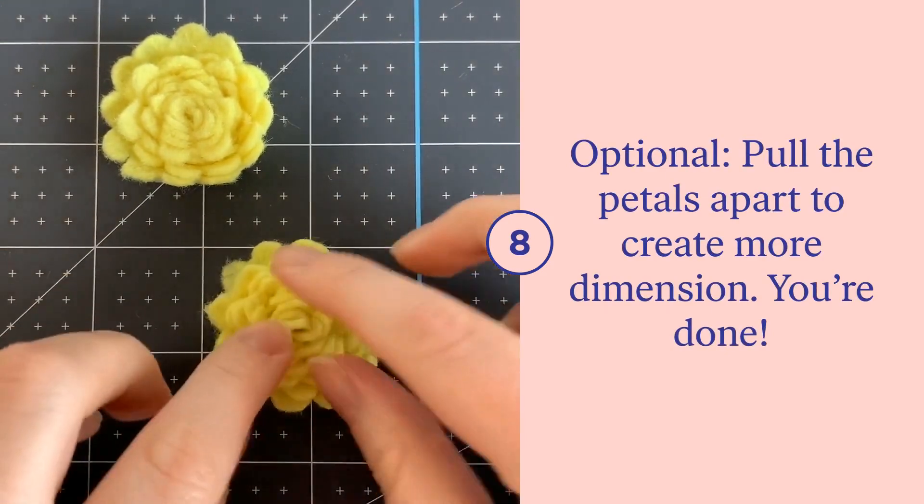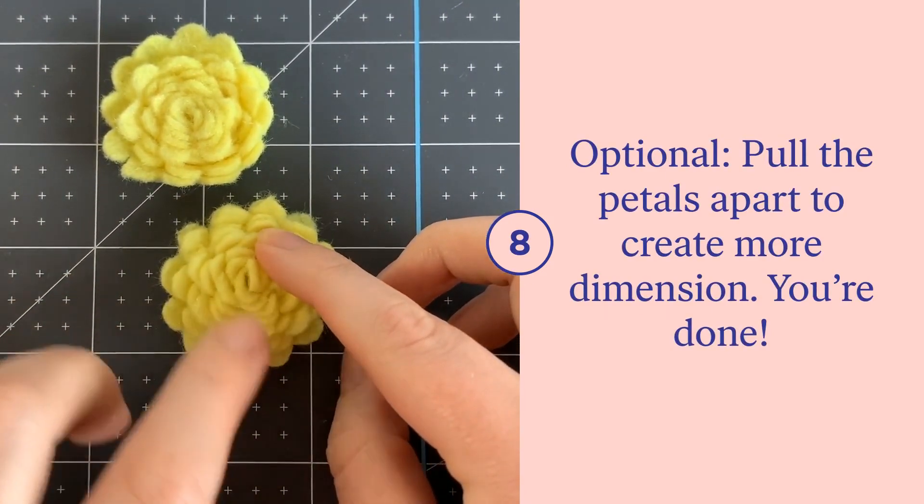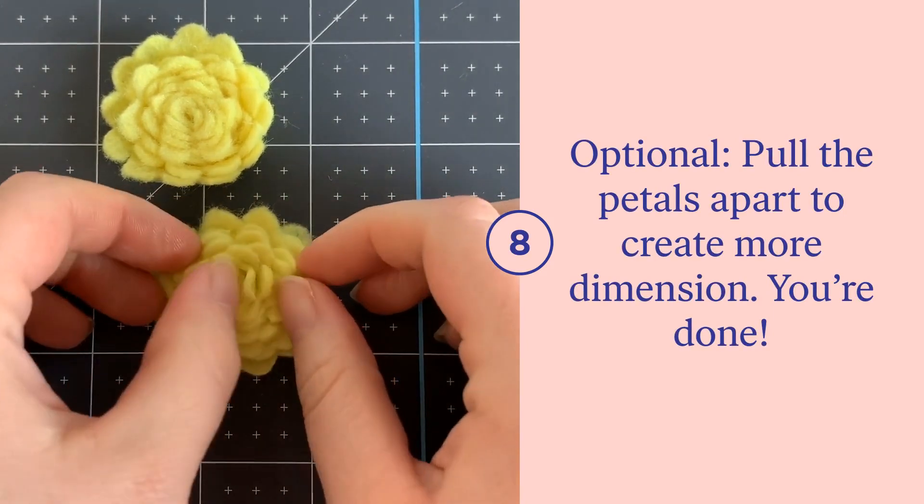If you want to make your flower more dimensional, you can kind of pull the layers apart and create some separation, but otherwise your flowers are done.